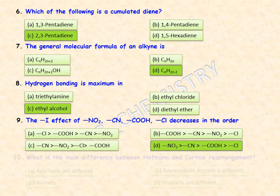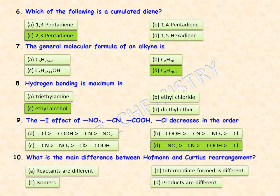What is the main difference between Hoffman and Curtius rearrangements? Both share an isocyanate intermediate, as studied in 11th and 12th grade. However, the right answer is that the reactants are different for those two rearrangement reactions.